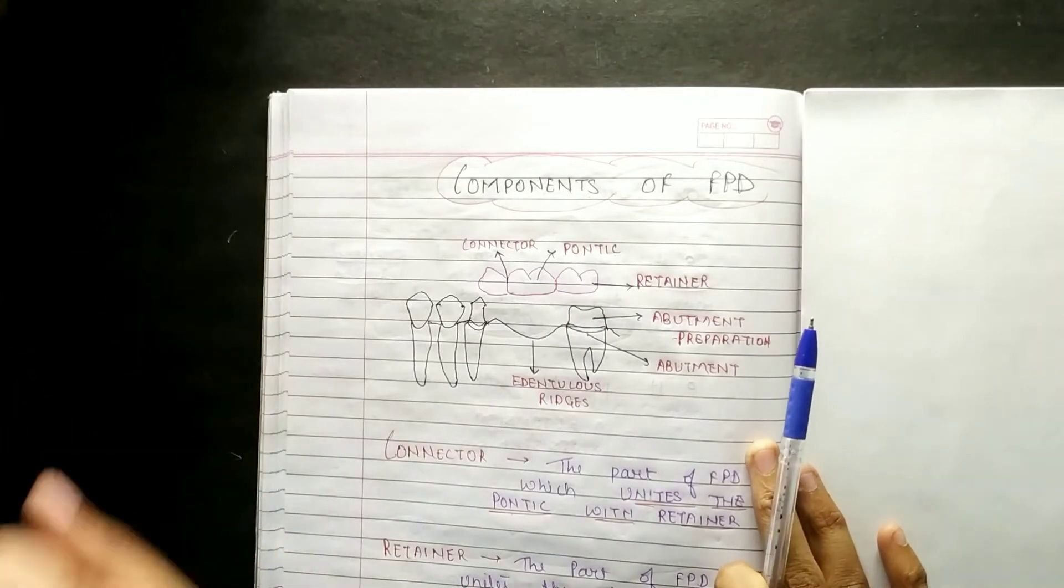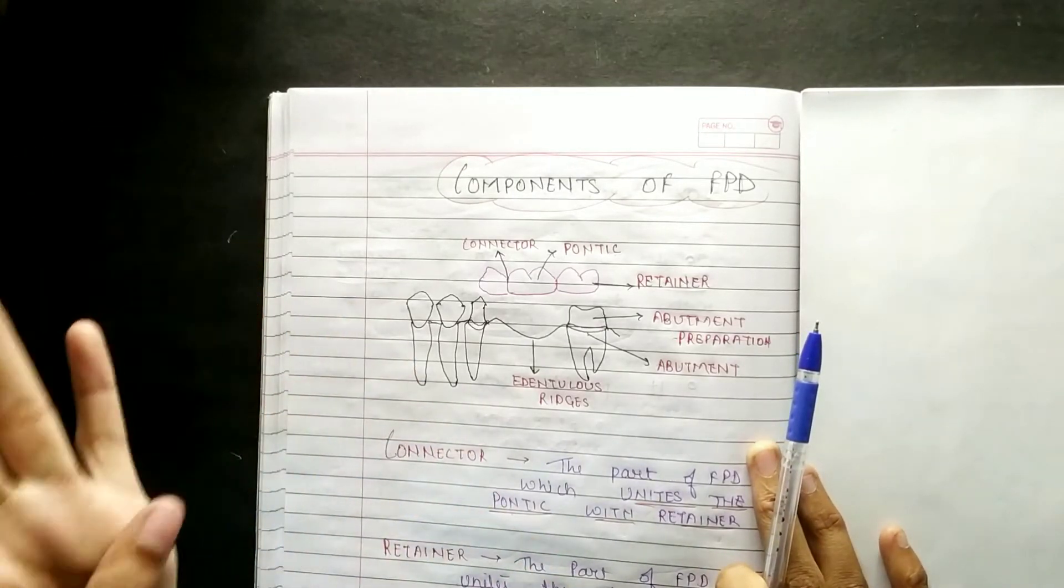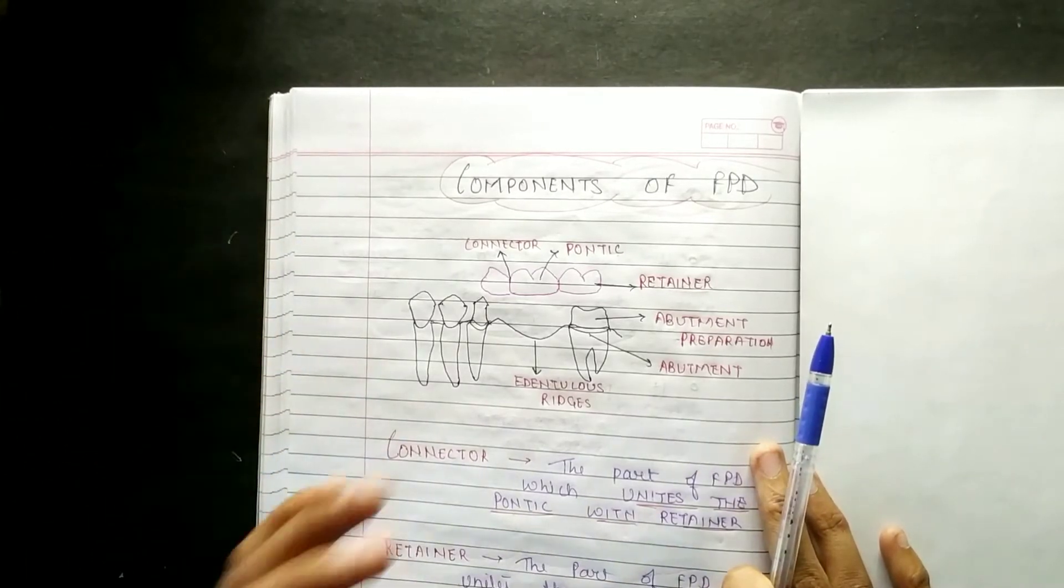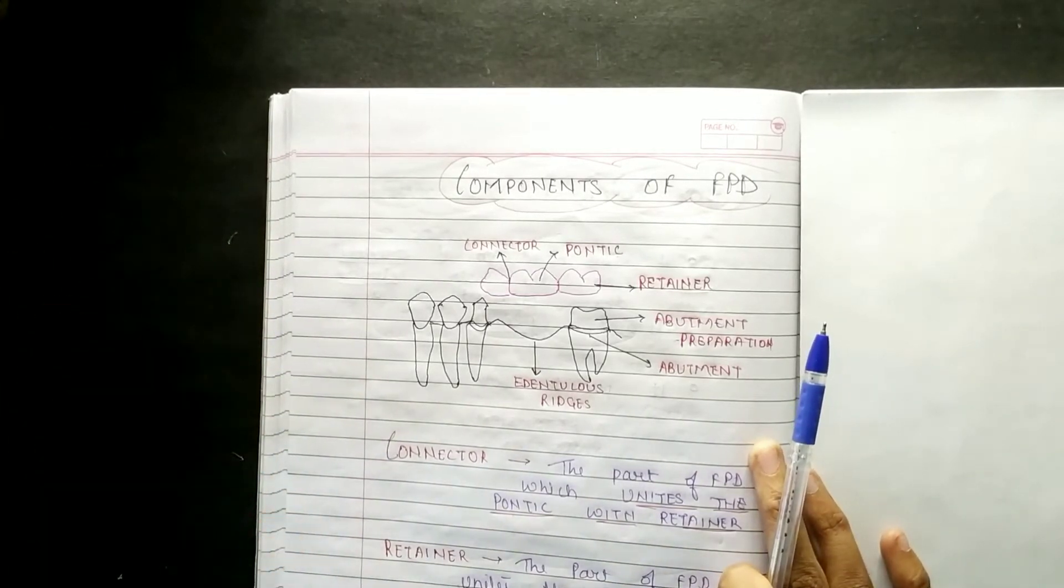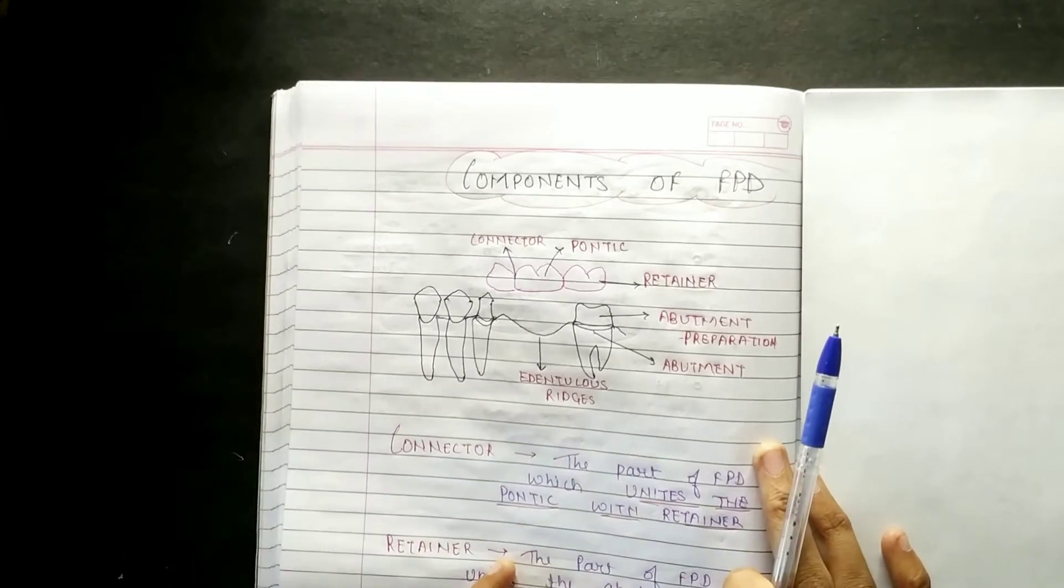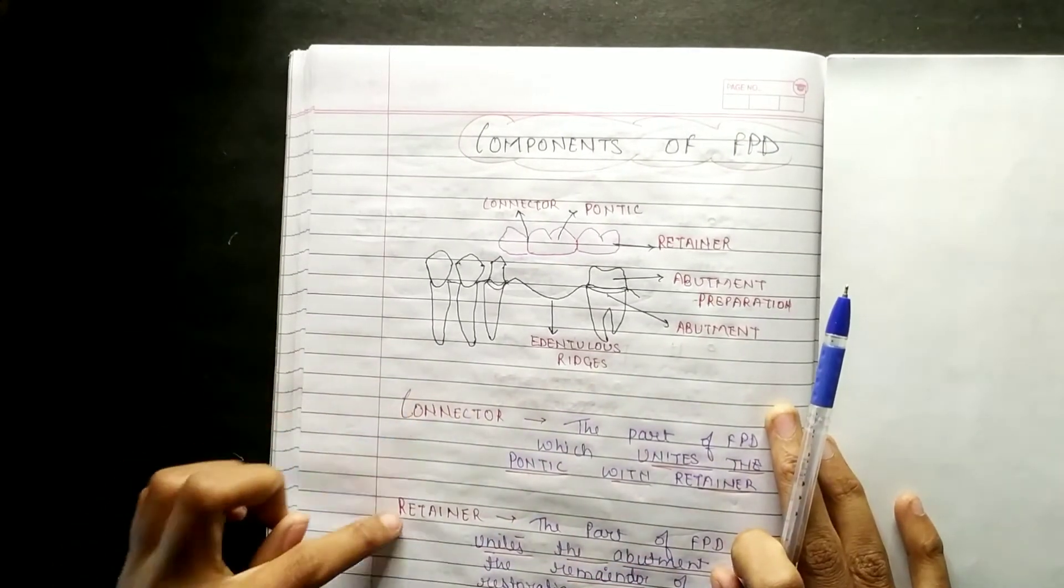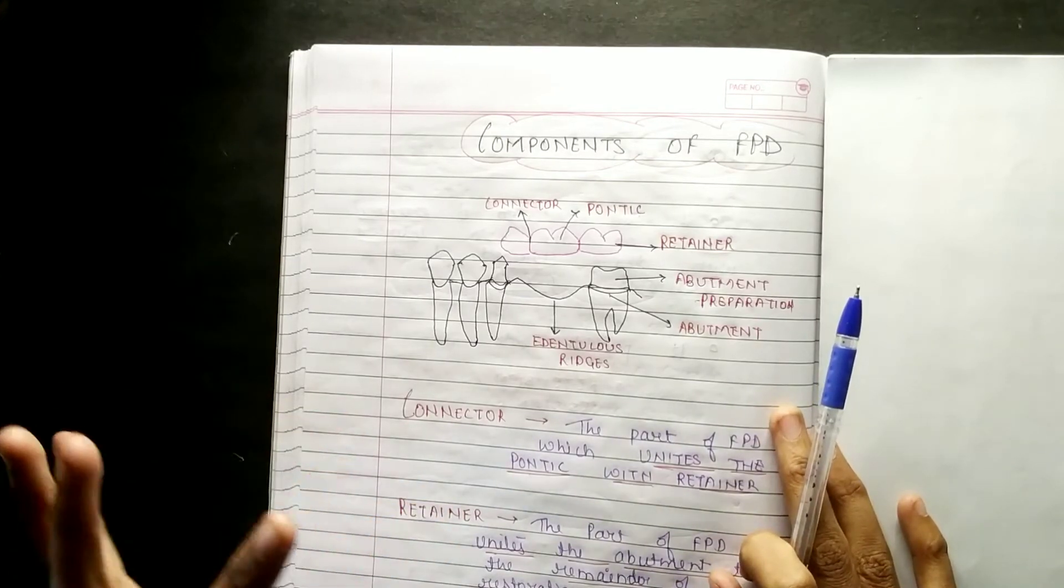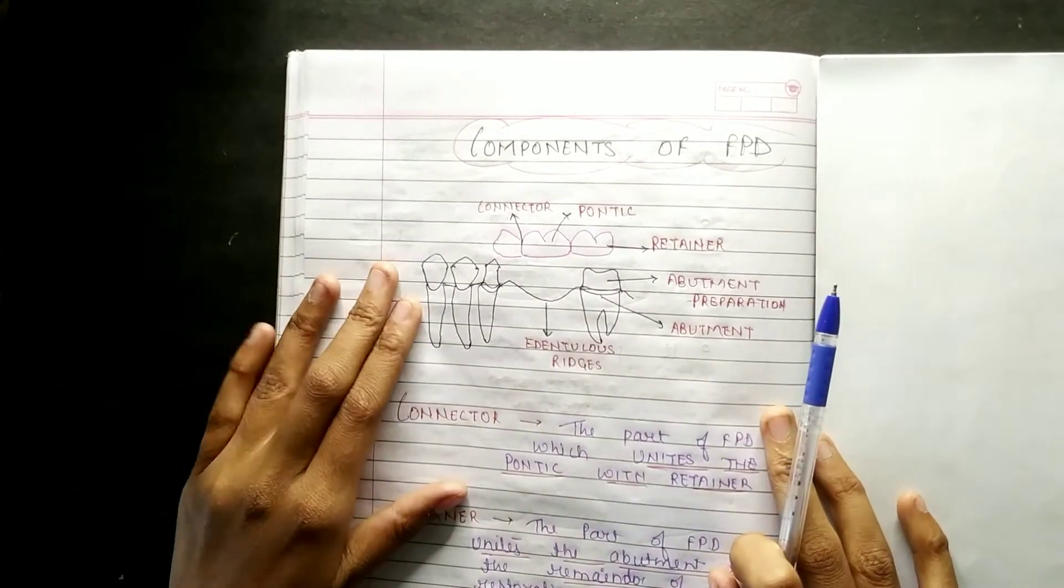Basically you have four components: First is Abutment, Connector, Retainer, and Pontic. Abutment is a different topic. For now, the main components of FPD - if I talk about Abutments,